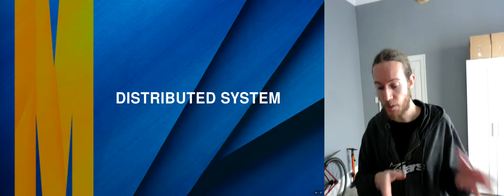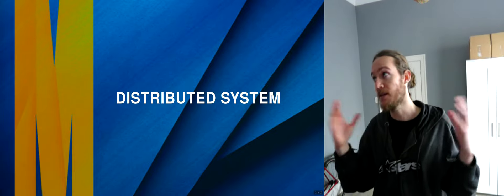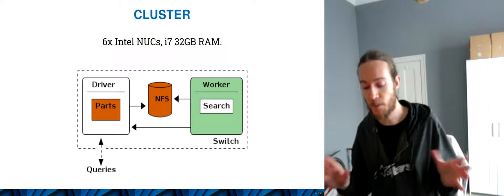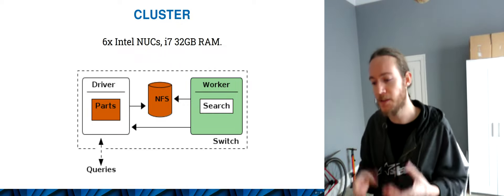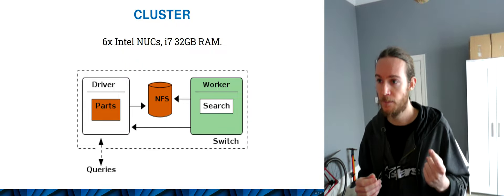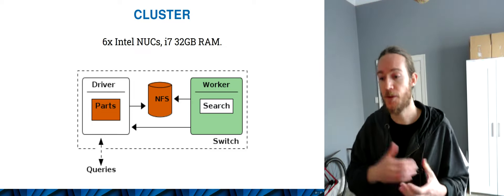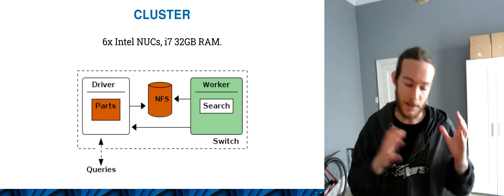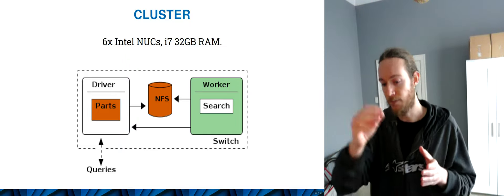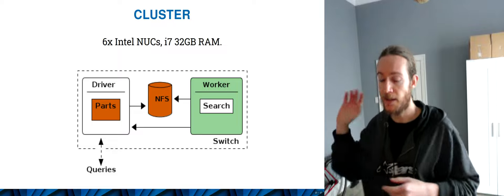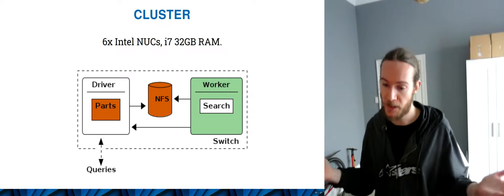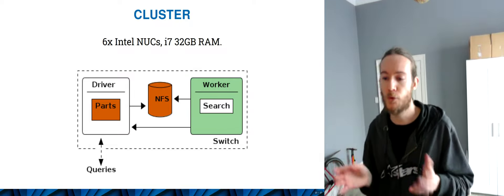Using this efficient, sliceable oracle, we built our distributed system. Our experimental setup runs on six Intel NUCs — tiny system-on-chip boxes running i7s with about 32 gigs of RAM. We dedicate one as the driver: it connects to the internet, receives queries, partitions them, and sends queries with the right targets to the right workers. We've got five workers; our database is about 14 gigs, so each worker is responsible for about two to three gigabytes of data.